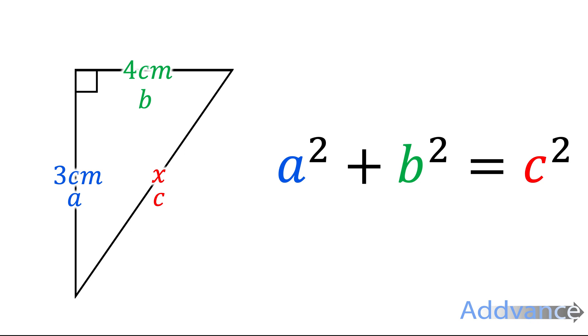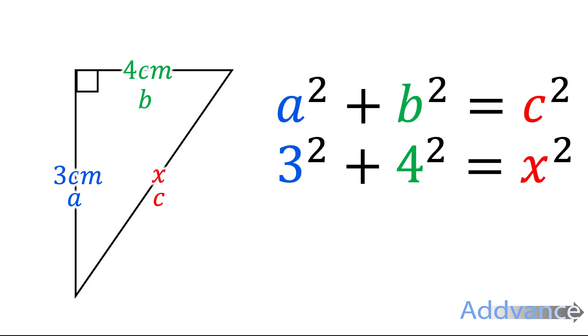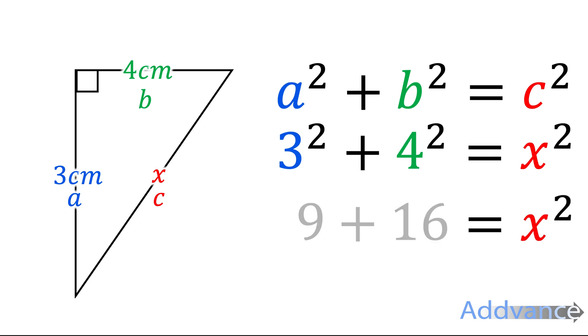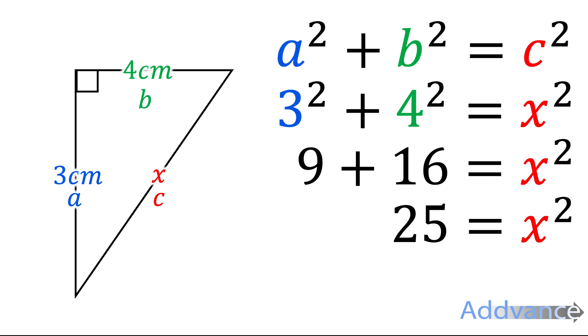We replace the letters in the equation. The three is the A, the four is the B, and then the X is what we want to find. That's where C goes. So now we can start solving it. Three squared is nine, and four squared is 16. So you can write nine plus 16 is X squared, and nine plus 16 is 25. So 25 is equal to X squared.